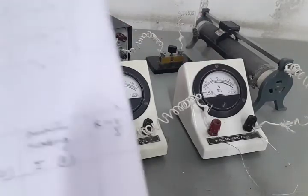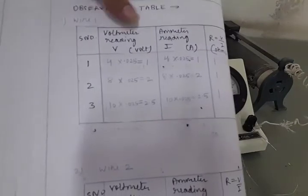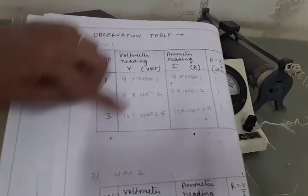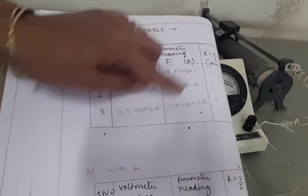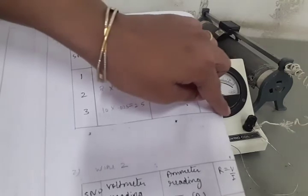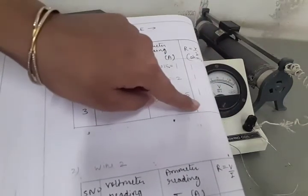Now, once we take all the readings, that means three set of the readings, voltmeter, ammeter together, then R will be obtained by dividing V and I. We will take R mean. R mean is coming 1 ohm.